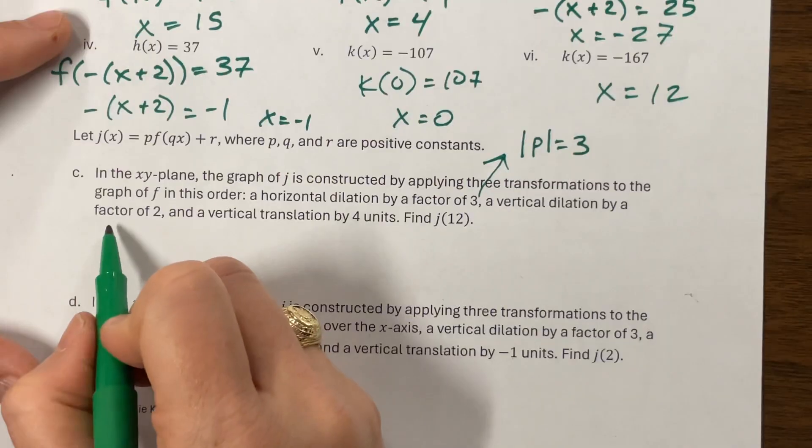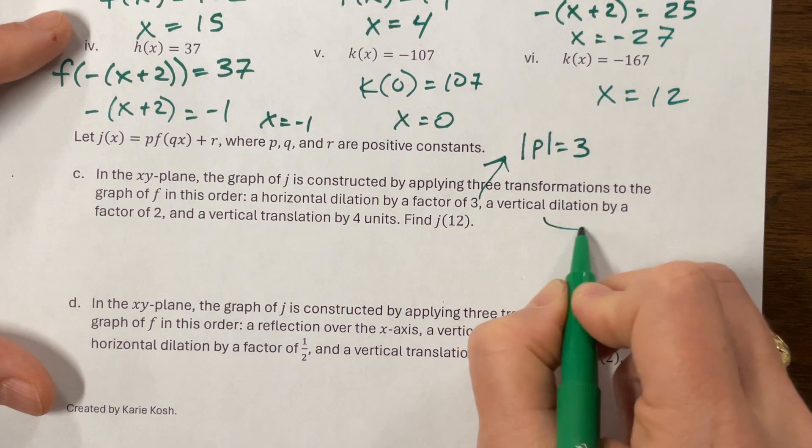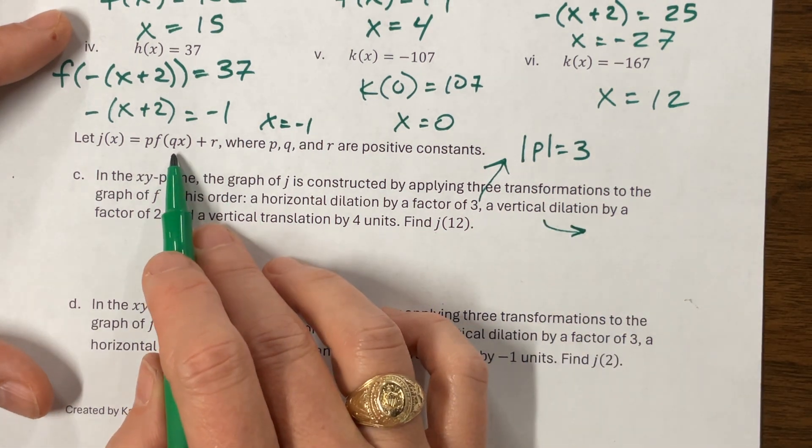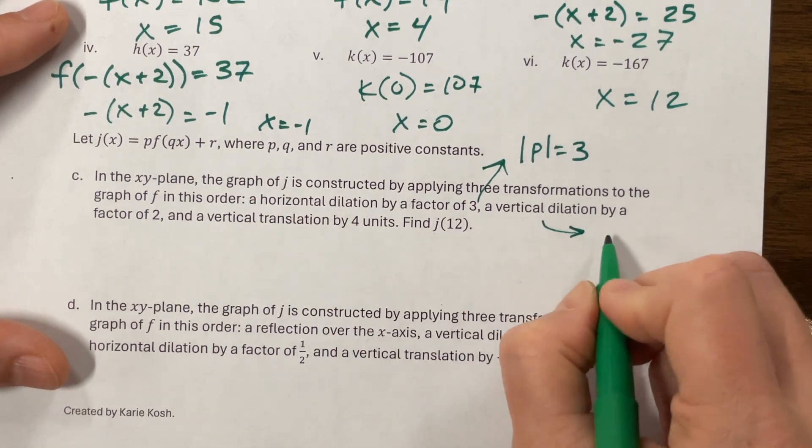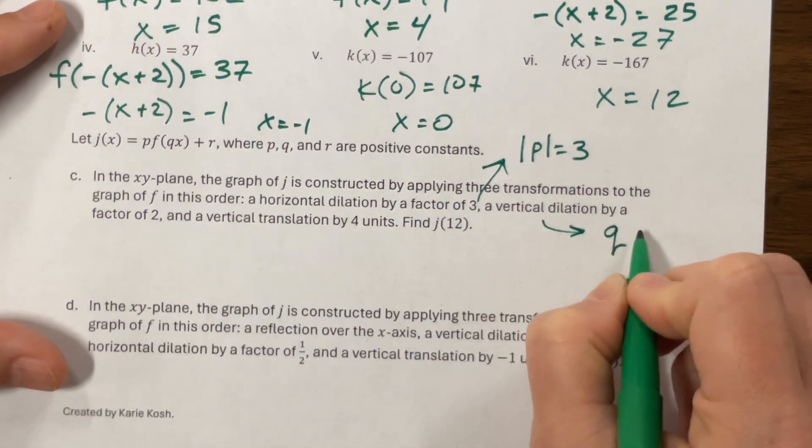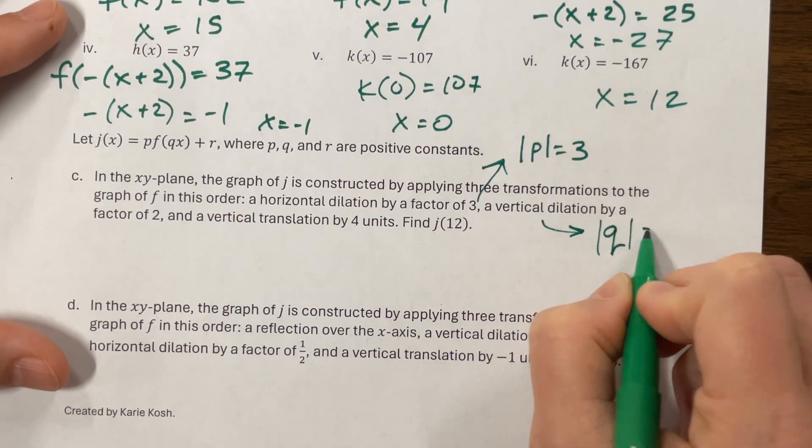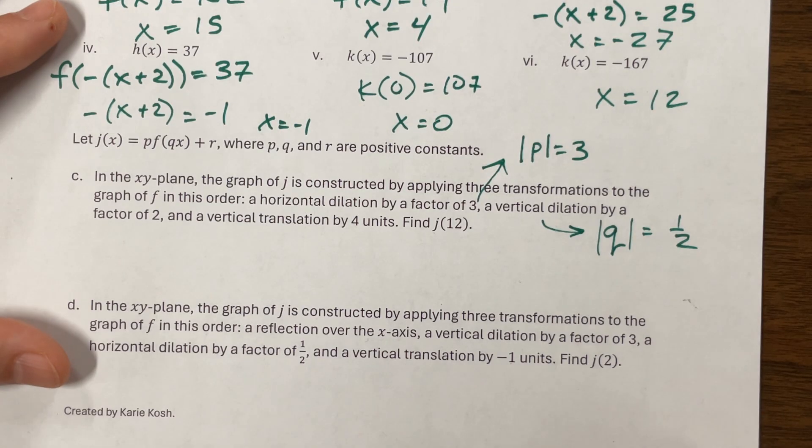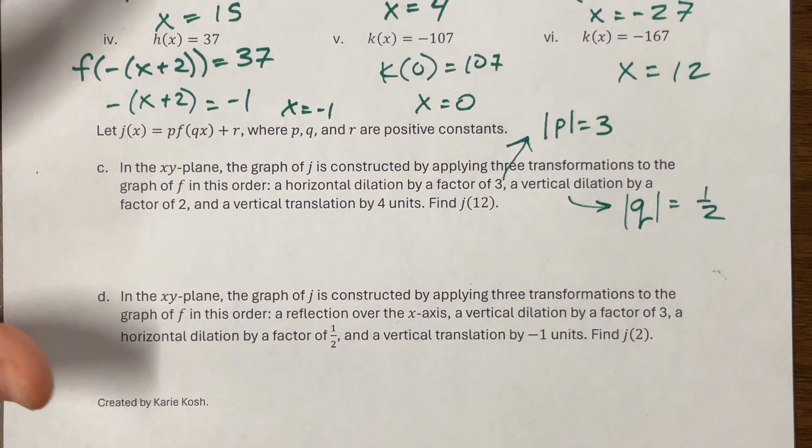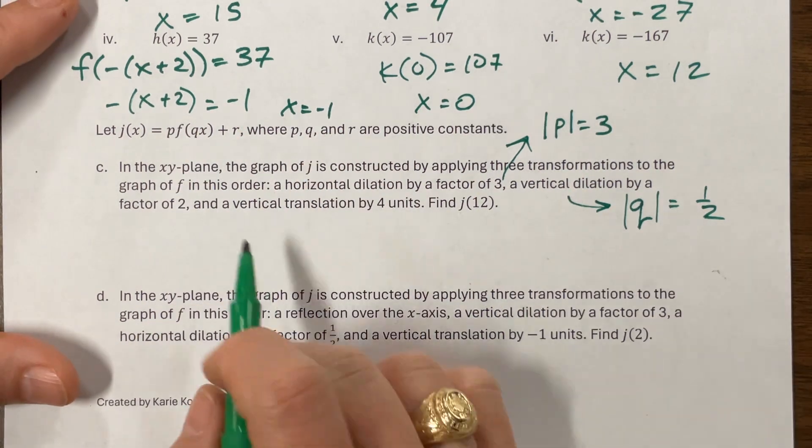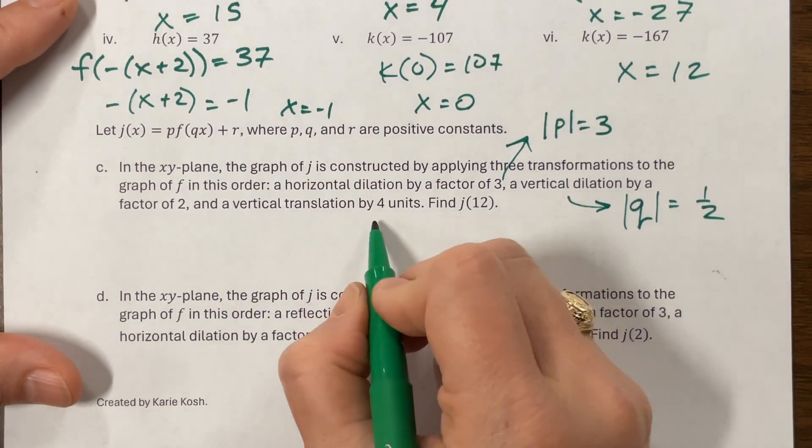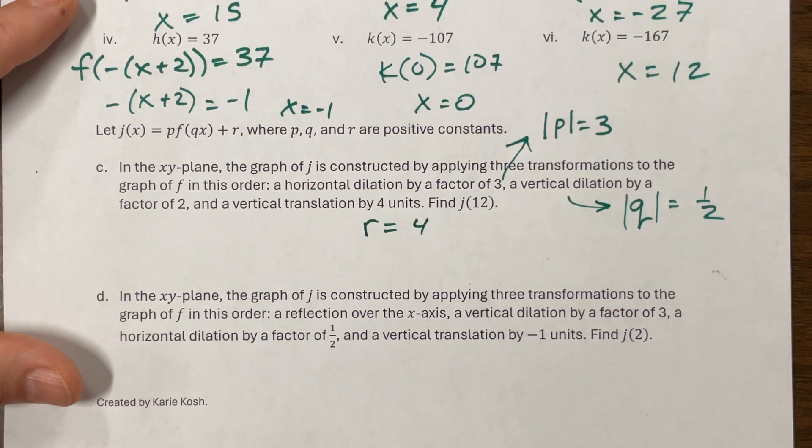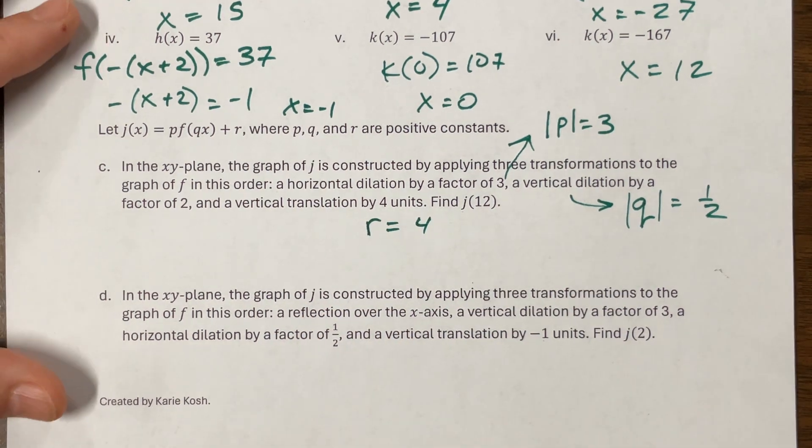A vertical dilation by a factor of two. So a vertical dilation, if it has a factor of two, that means that this Q value right here is going to be one over two. So that means Q, well, technically the absolute value of Q is equal to one over two. I think that they should tell us if there's any reflections, a vertical translation by four units. So that tells us that this R value that we have is going to go up four. So let's write an equation.